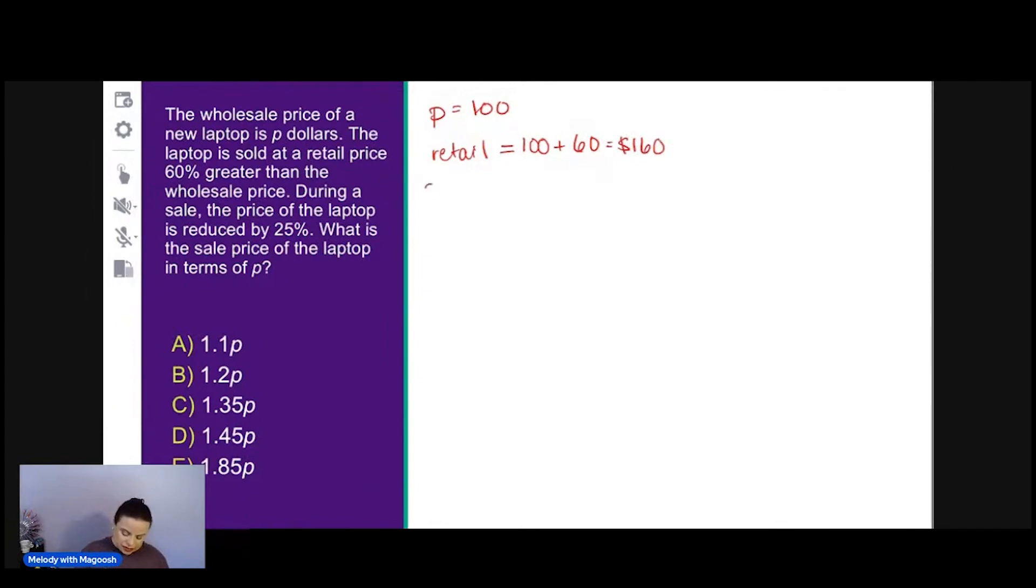Then we're going to have a sale. Just following along in the problem. During a sale, the price of the laptop is reduced by 25%. So we'll start at that retail $160 price. And we need to subtract 25% or one fourth. Perhaps you notice that 160 is just 16 times 10, and a fourth of 16 is four. So a fourth of 160 is $40.